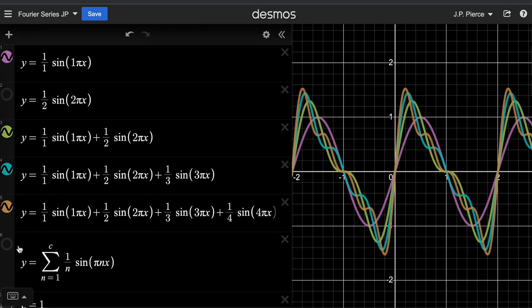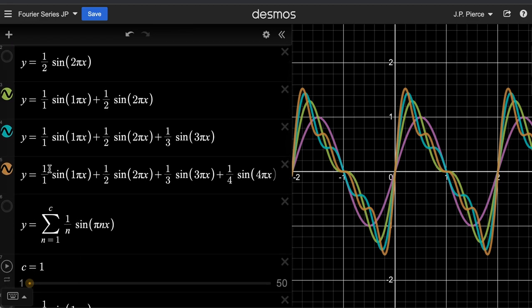You might think, what's going to go on if I keep on adding terms? Well, a nice tight way to write that is 1 over 1 sine 1 pi x, 1 over 2 sine 2 pi x.